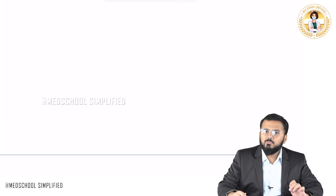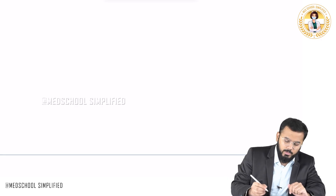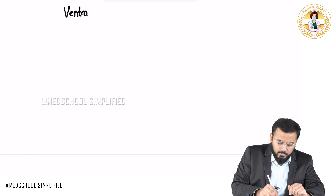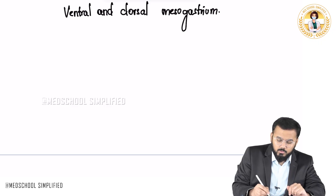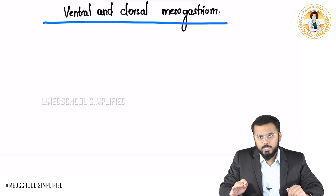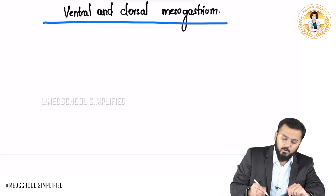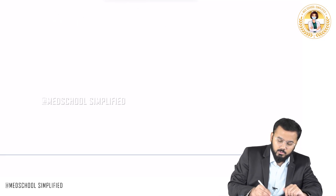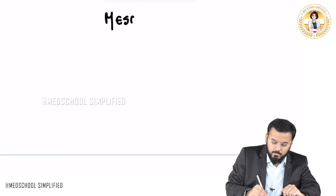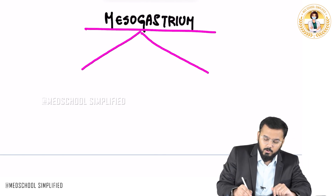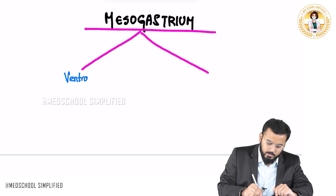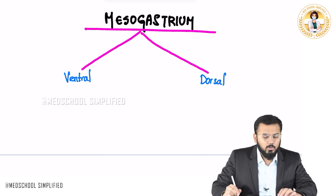Hello guys. So now we shall be discussing regarding what is ventral mesogastrium and what is dorsal mesogastrium. There are two types of mesogastrium: one is ventral and the other is dorsal. Let us see what these are.